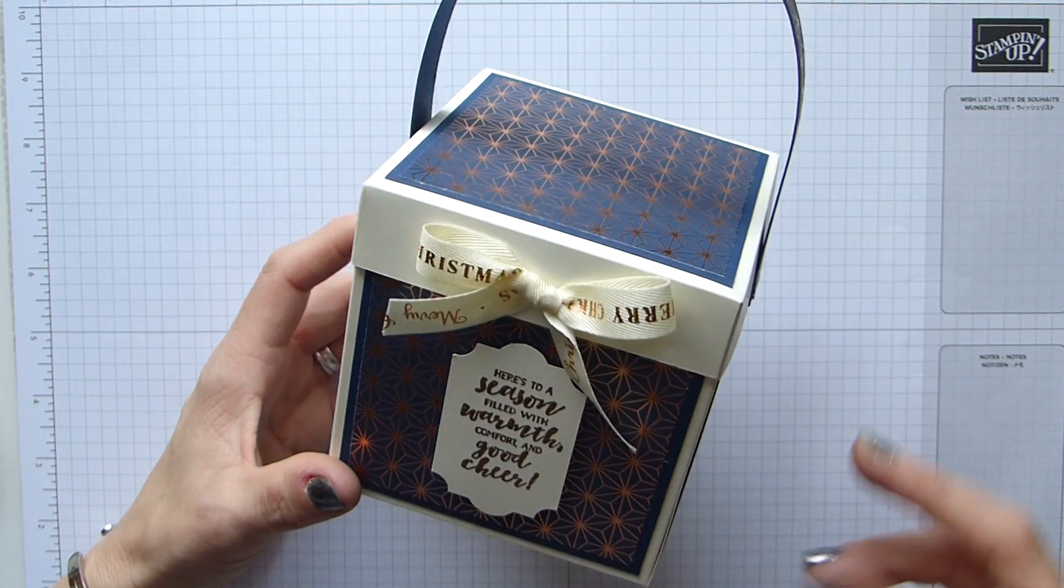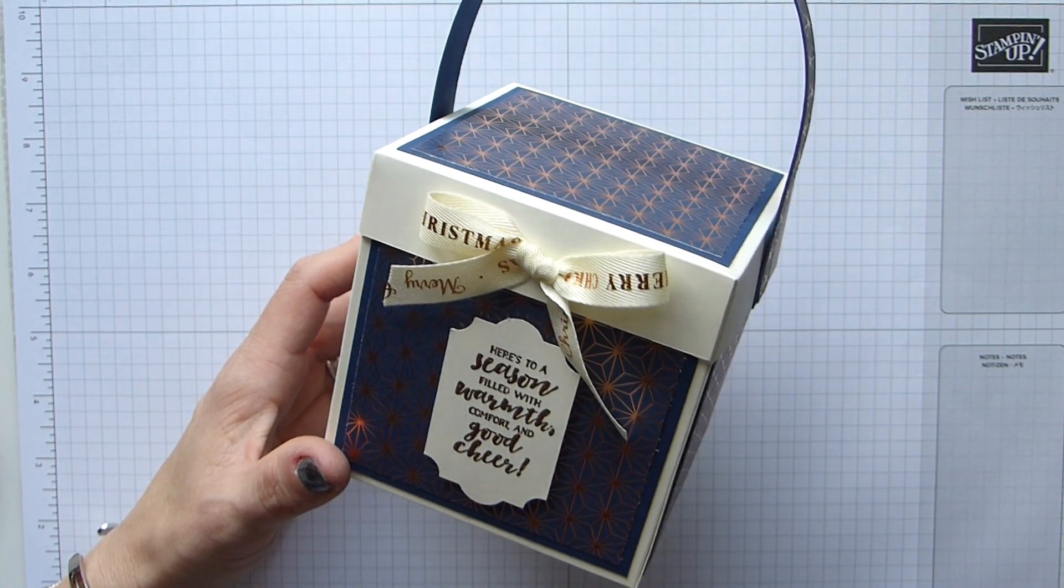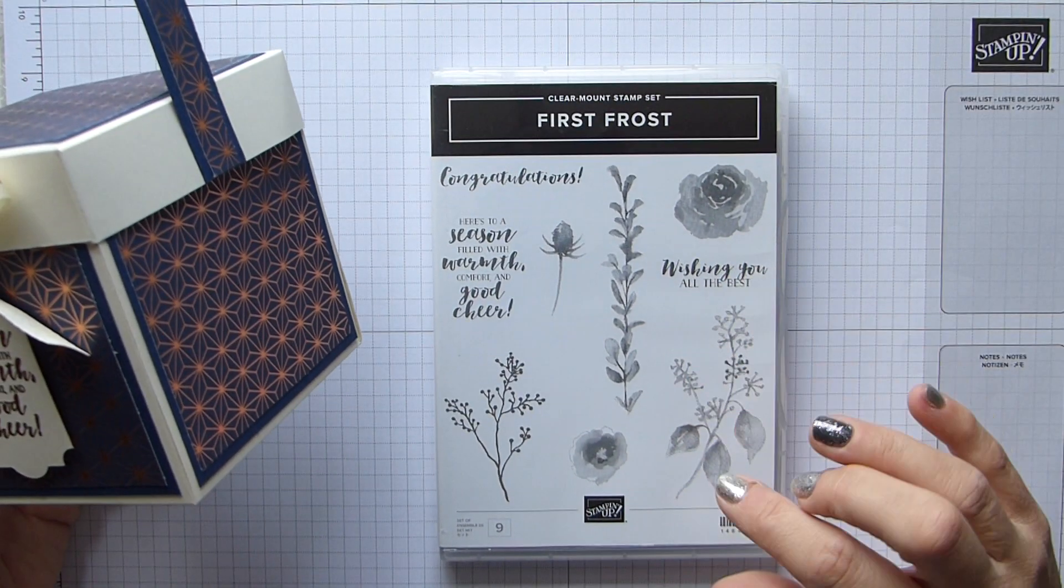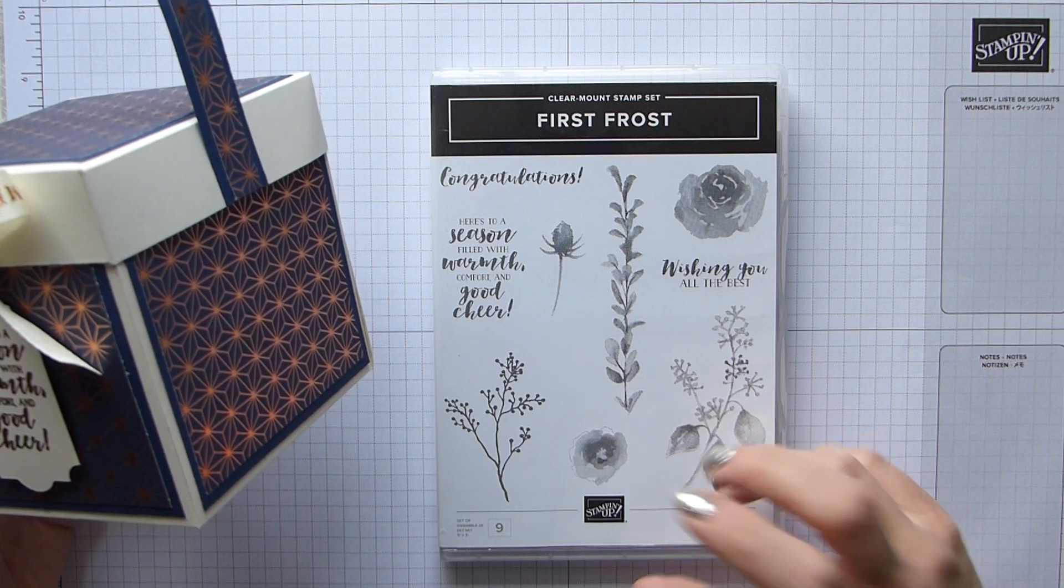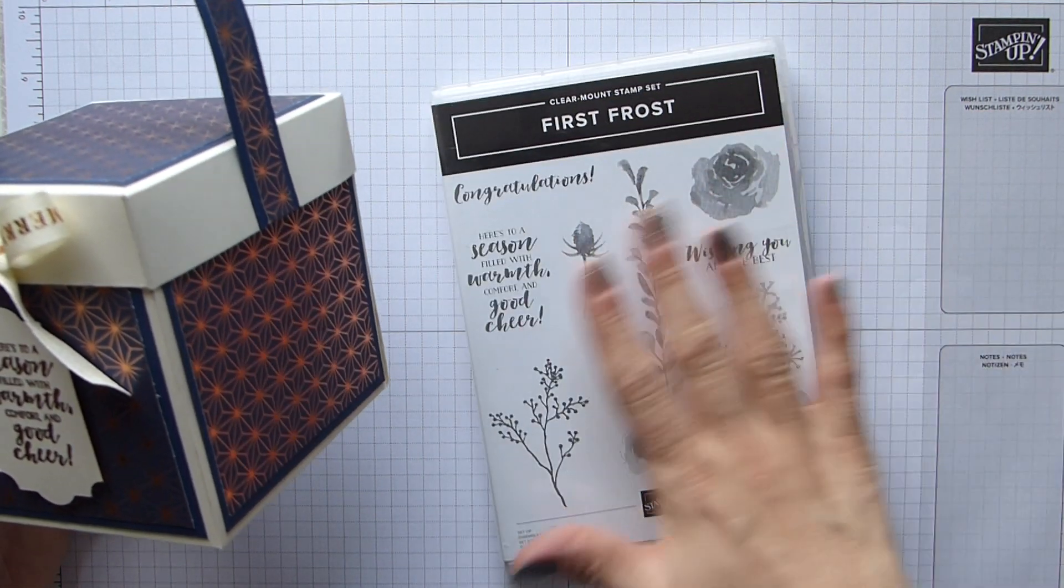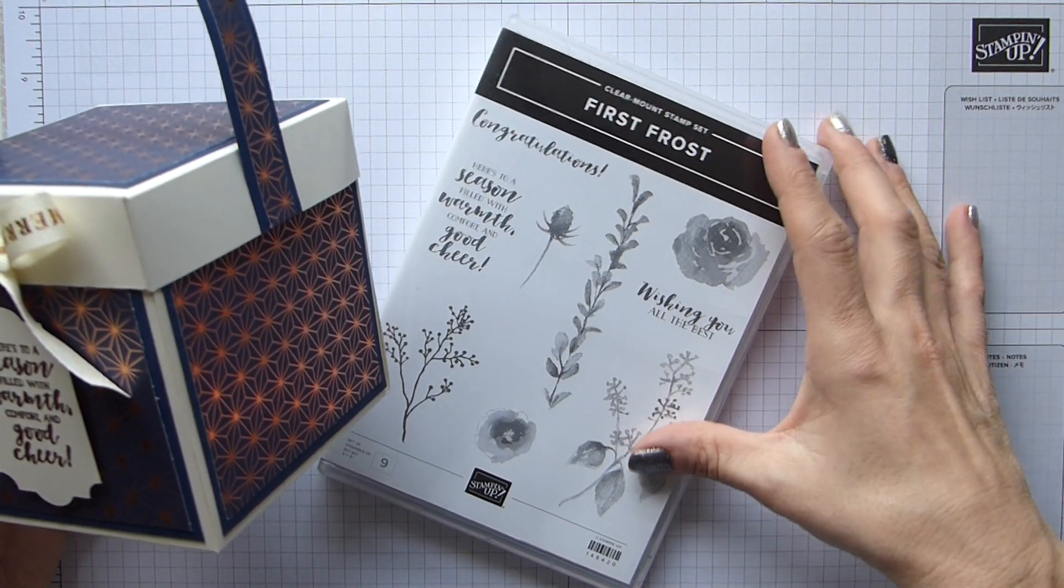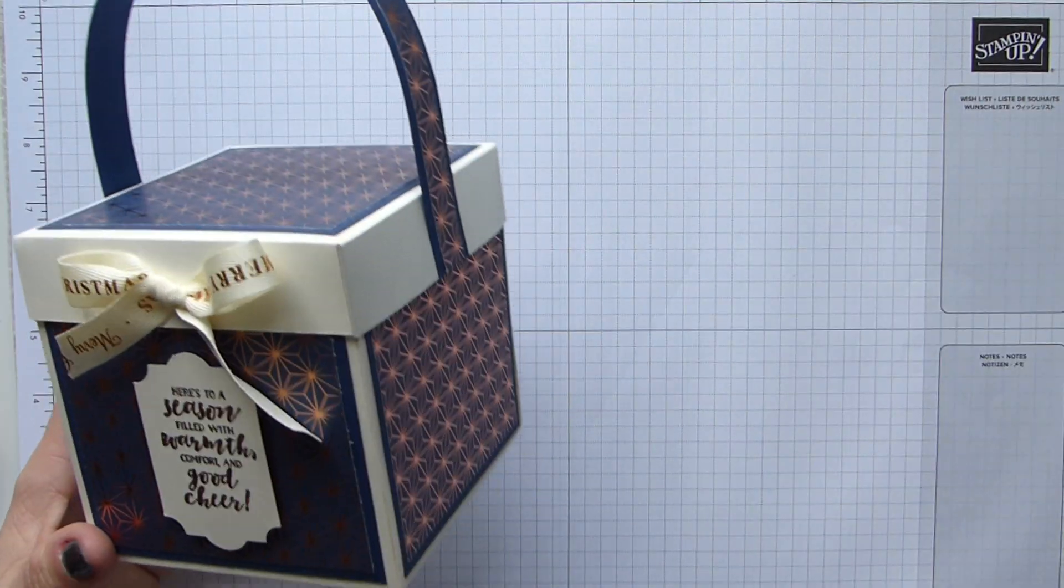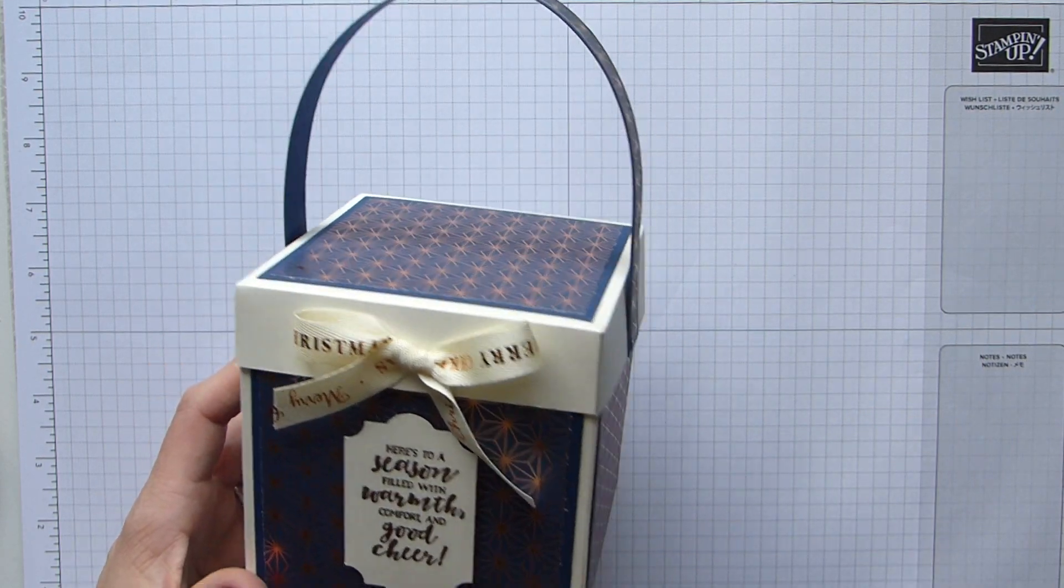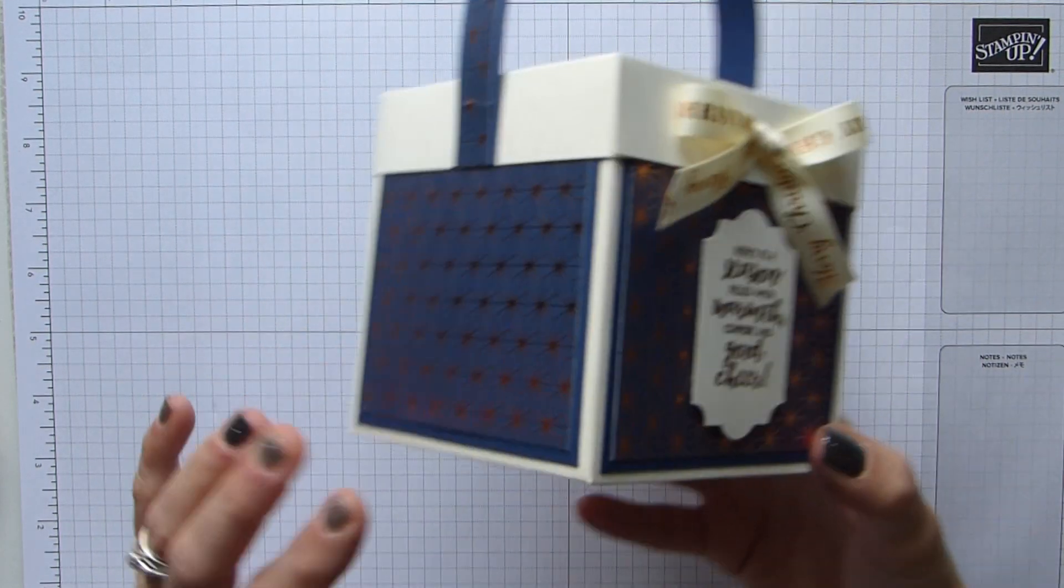The stamp set I'm actually using is First Frost. I don't know if you remember the DSP that came with it last year, it was sort of a mint macaron and it had a silvery pearlized effect to it, it was beautiful. And I actually used that paper, which is quite funny as I've used that sentiment from that stamp set, but it was a slightly smaller box.